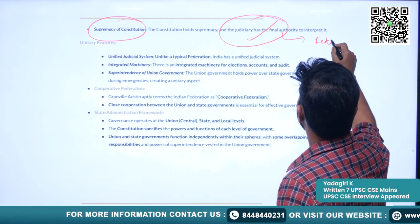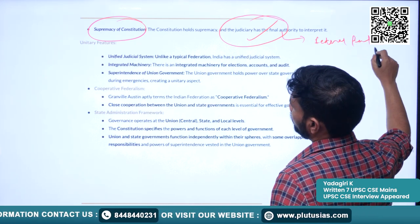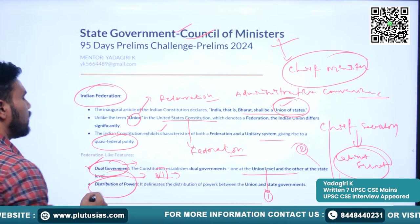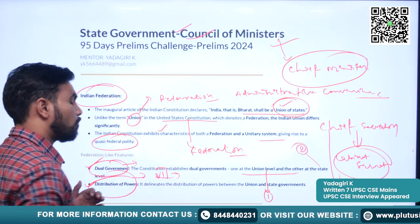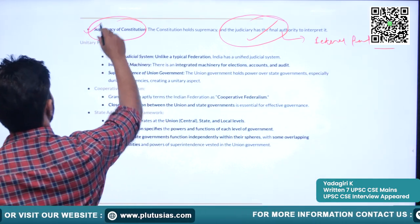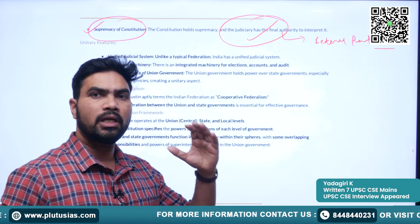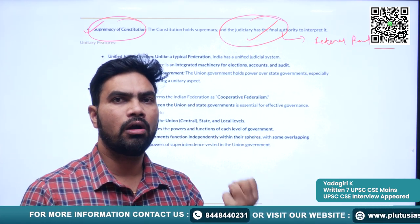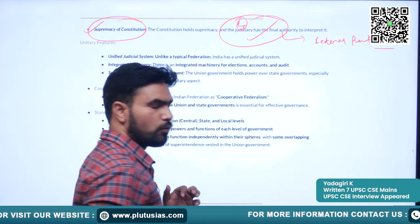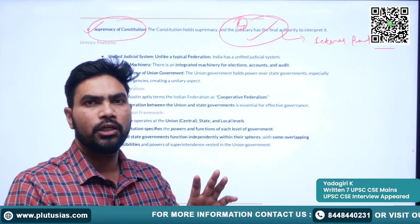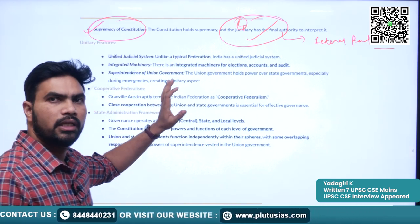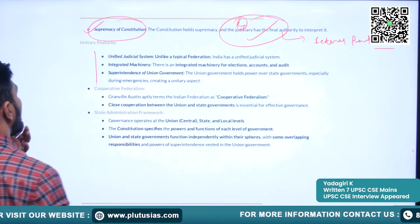So these are the federal features: dual government existing at two levels, distribution of powers through the constitution itself, supremacy of the constitution — both states and center draw their powers from the constitution — and fourth, the judiciary as a feature to resolve conflicts between the center and states. Now let's understand the unitary features — what gives India a unitary nature.